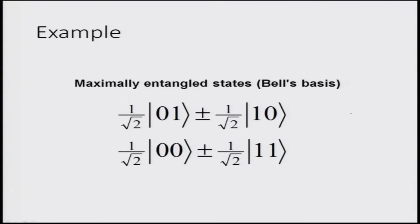The entangled states are ones where we only need to measure one of the states, which ensures the measurement of the other state. Maximally entangled states — or Bell's basis states — are examples of this kind, ensuring that once we measure the first qubit, the second qubit measurement is guaranteed because they are entangled. These states cannot be broken down into individual qubits as is possible for superposition states, and that is why they are unique and have been utilized in teleportation.